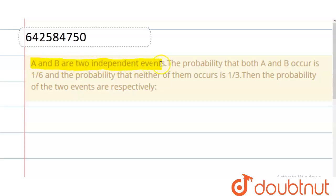A and B are two independent events. The probability that both A and B occur is 1/6, and the probability that neither of them occurs is 1/3. Then the probability of the two events are respectively: